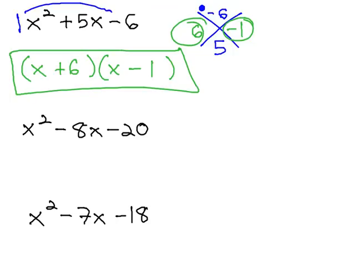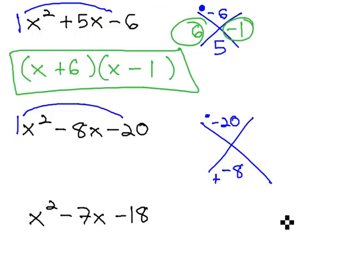Again, it is very important to be careful of negative signs. Let's take a look at another example. Here, we're doing x squared minus 8x minus 20. Notice, there's a 1 in front of x squared, so we can use our shortcut. 1 times negative 20 is negative 20, and negative 8 goes on the bottom.